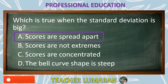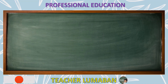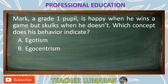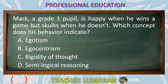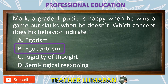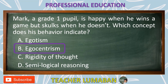Mark, a Grade 1 pupil, is happy when he wins a game but skulks when he doesn't. Which concept does his behavior indicate? Letter A: Egotism. Letter B: Ego-centrism. Letter C: Rigidity of thought. Letter D: Semilogical reasoning. The correct answer is Letter B, ego-centrism. The ego-centrism concept is what his behavior indicates.